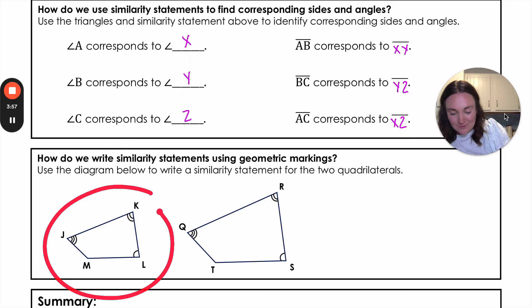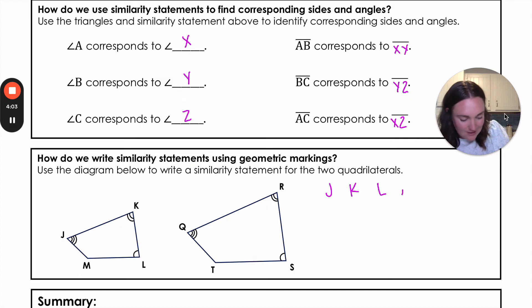I'm going to start by writing this first quadrilateral out. So I'm going to write J, K, L, M. And like I said, the J has three. I know that's got to correspond with Q that also has three. My K has two is going to correspond with R that has two.